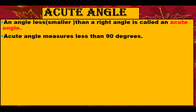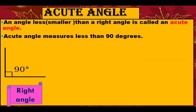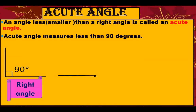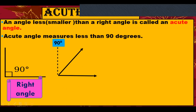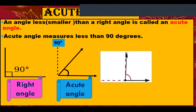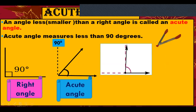An angle less than or smaller than a right angle is called an acute angle. Here are a few examples of acute angles measuring less than 90 degrees.